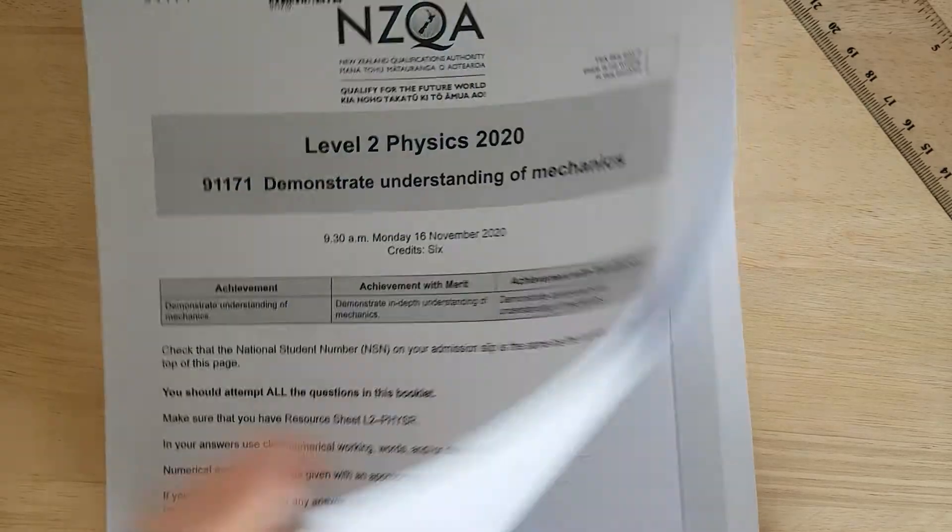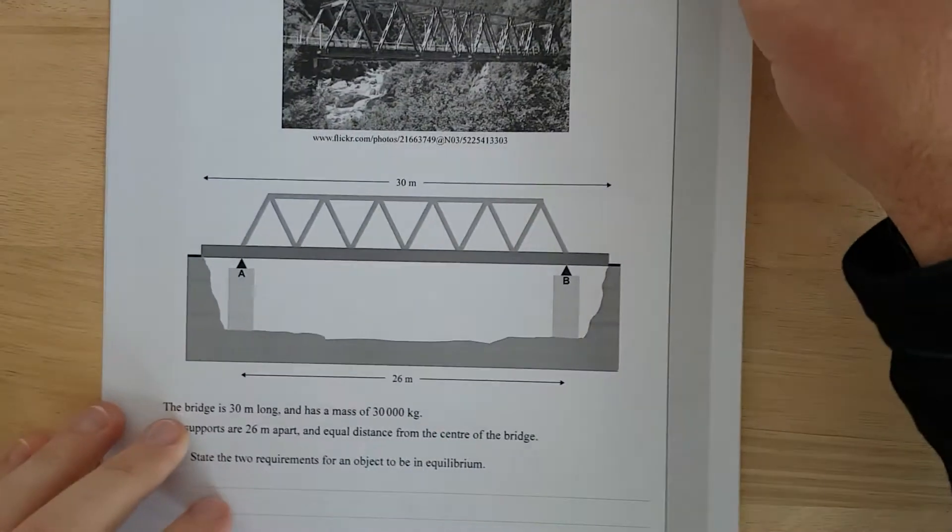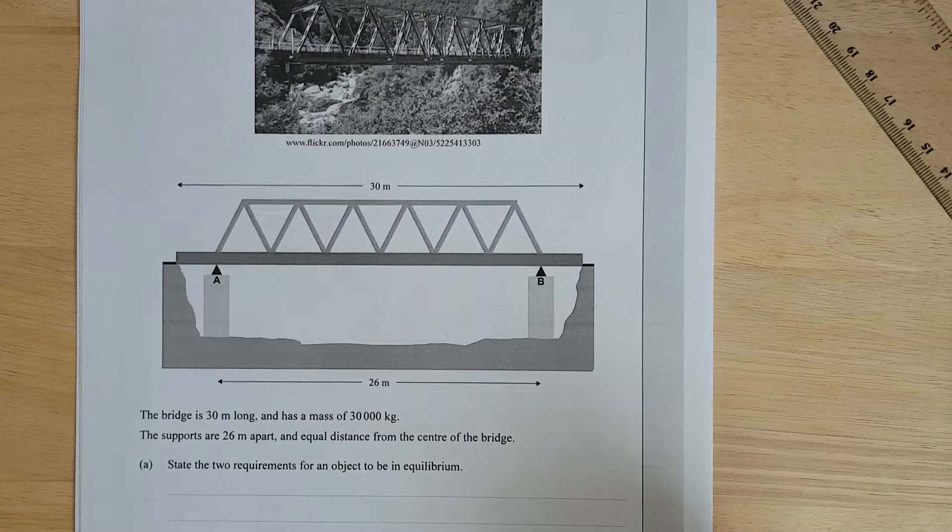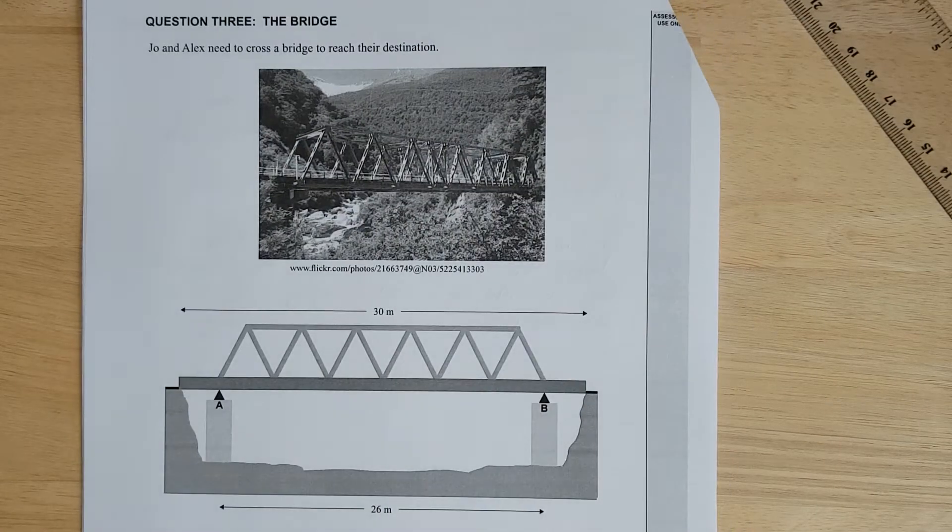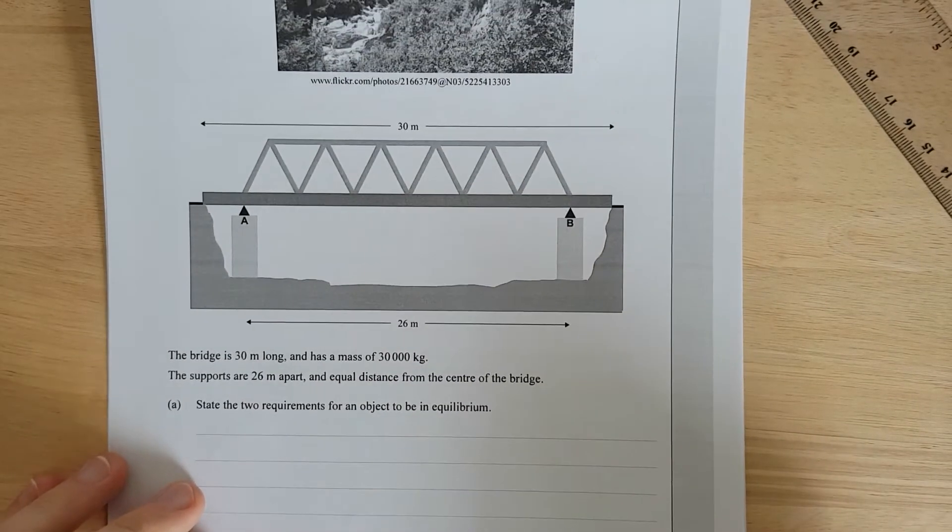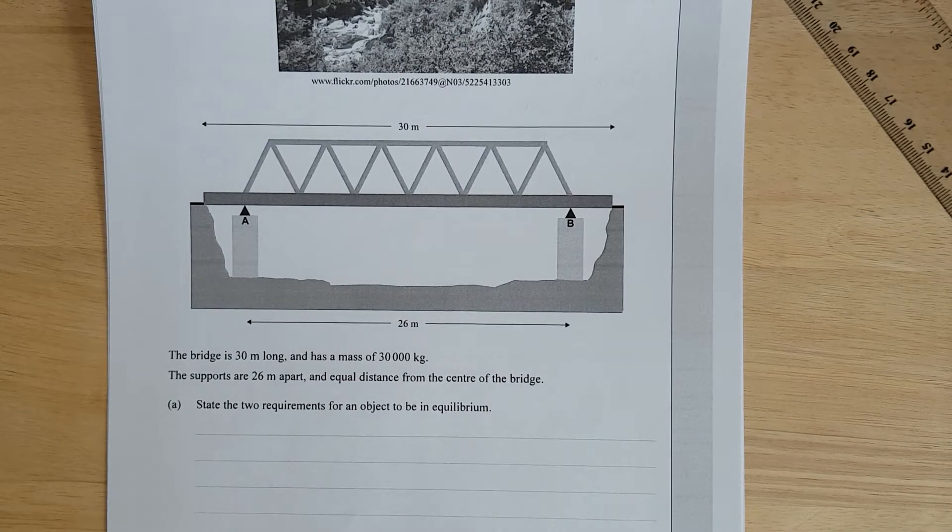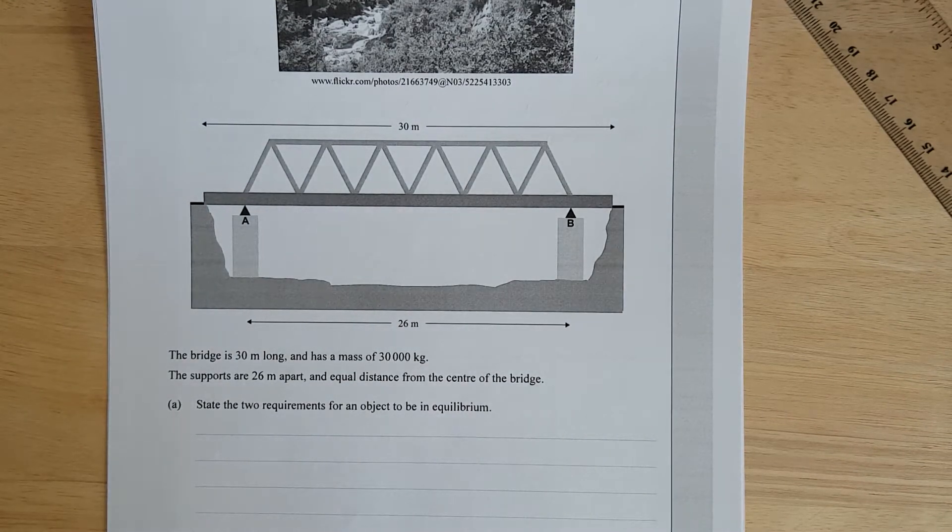This is the 2020 Mechanics Exam question 3. What have we got up here? Joe and Alex need to cross a bridge to reach their destination. The supports are 26 meters apart, equal distance from the center of the bridge.